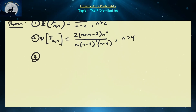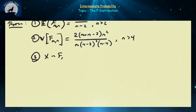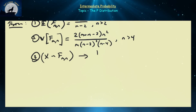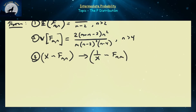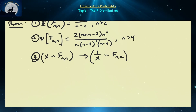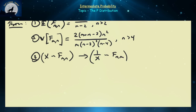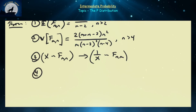A beautiful property: if X follows an F(M, N) distribution and you take its reciprocal 1/X, you get an F(N, M) distribution — the degrees of freedom simply swap. This shouldn't be surprising since F is a quotient of two chi-squared random variables; flipping them still gives chi-squareds, just with swapped degrees of freedom.